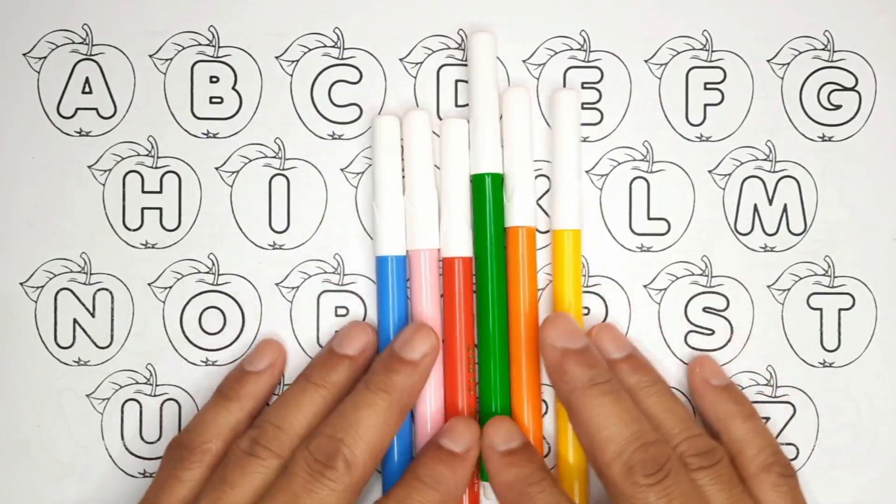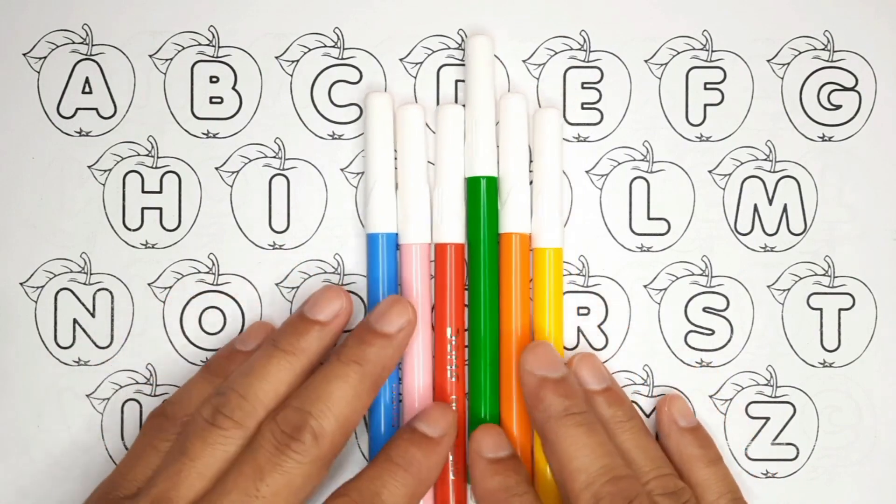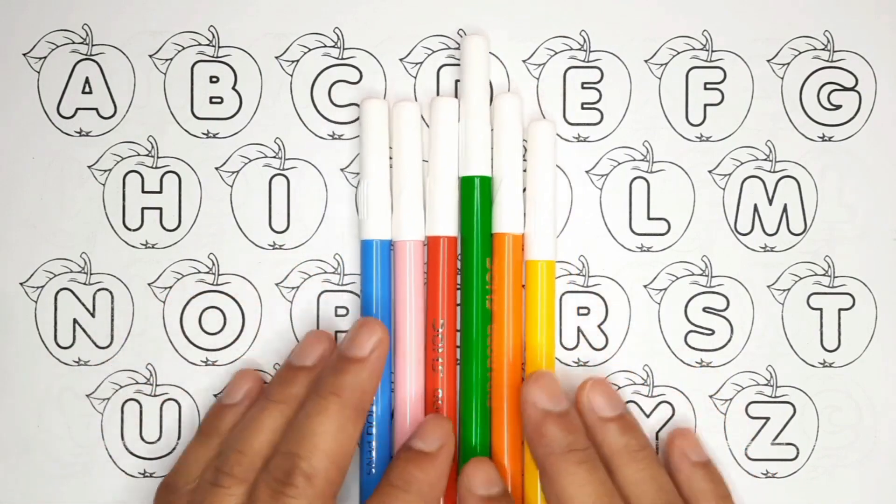Hello kids, welcome to Beena Kids Show. Today in this video we are going to learn the English alphabet letters A to Z.